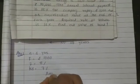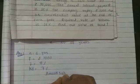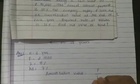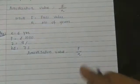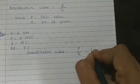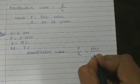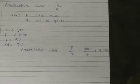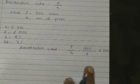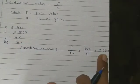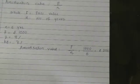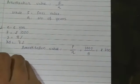Amortization value = face value / N = 1000 / 5 = rupees 200. This means the government will pay rupees 200 along with interest every year. So the principal amount will keep declining and at the end of maturity it will become zero.